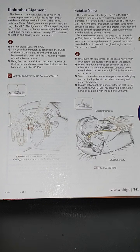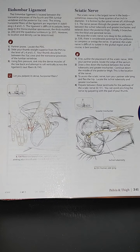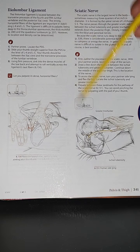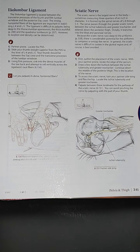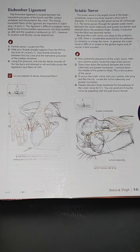The sciatic nerve is difficult to palpate in the gluteal region and is best avoided. First, outline the placement of the sciatic nerve. With your partner in prone, locate the edge of the sacrum and draw a line down between the ischial tuberosity and greater trochanter.